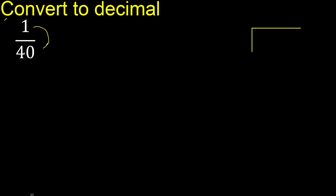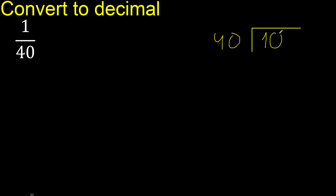1 divided by 40. 1 is less than 40, therefore complete. Always complete with 0, and 0 point. Point only once. 10 is less than 40.